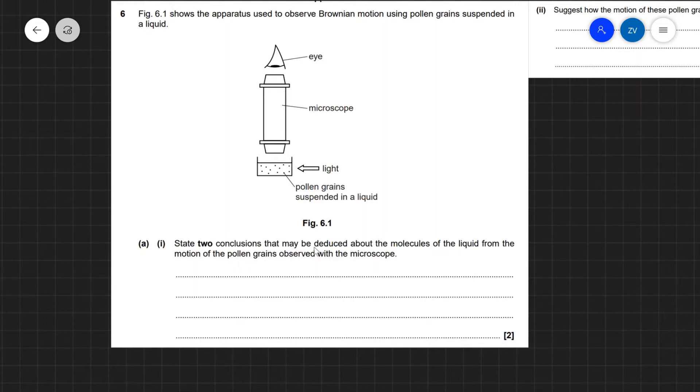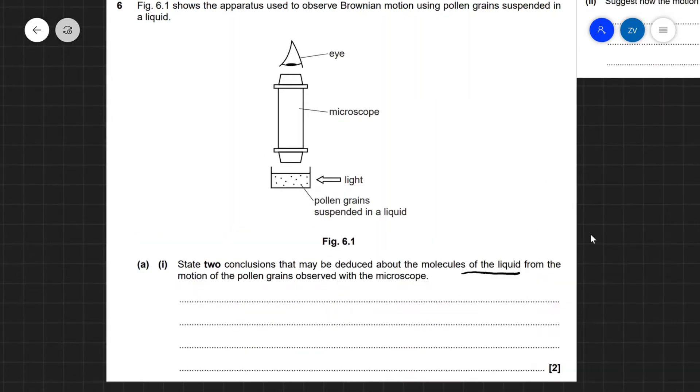Part A: State two conclusions that may be deduced about the molecules of the liquid, so I'm just going to underline that so I don't get confused later on, and the motion of the pollen grains observed with the microscope. Okay, well let's have a look at this in a little bit more detail.